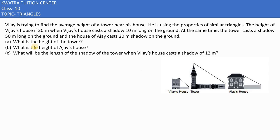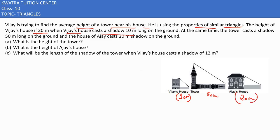In this problem, Vijay is trying to find the average height of the tower near his house using the properties of similar triangles. The height of Vijay's house is 20 meters, and when his house casts a shadow of 10 meters, at the same time the tower casts a shadow 50 meters long on the ground, and Ajay's house casts a 20-meter shadow. We need to find the height of the tower.